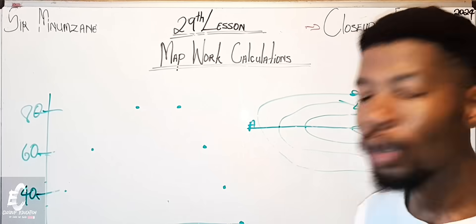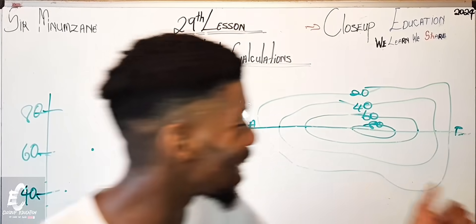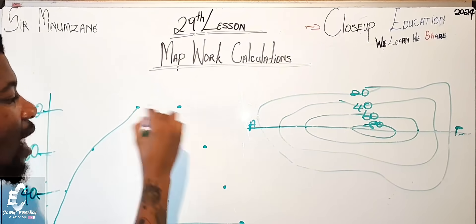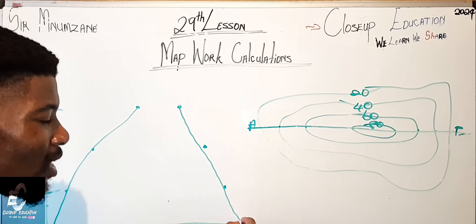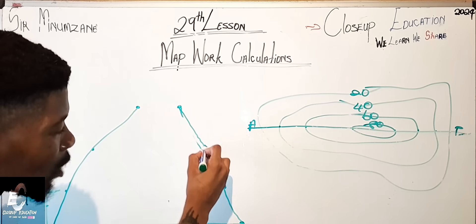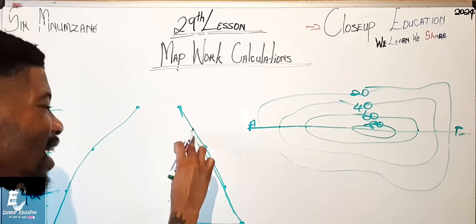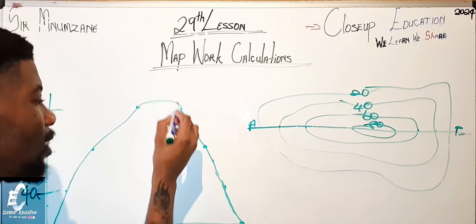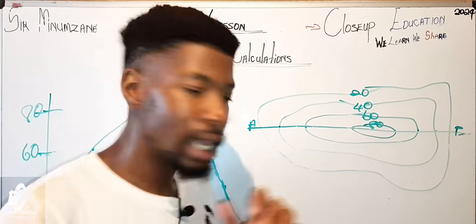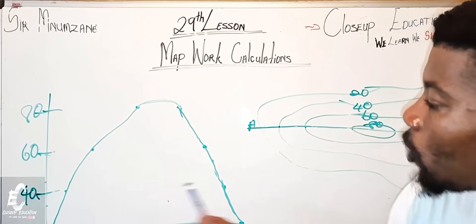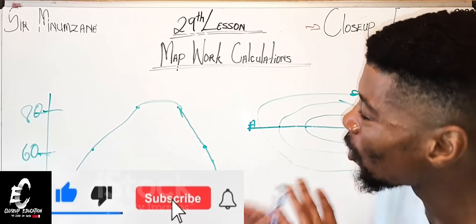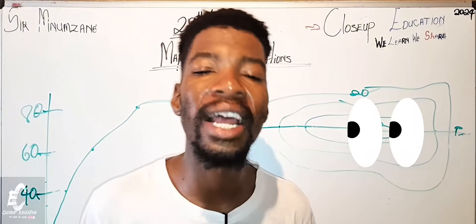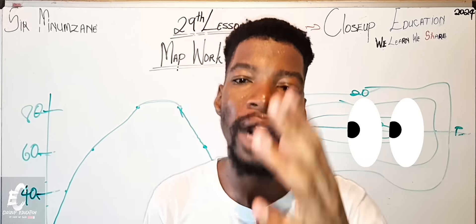Once you have all the dots plotted, you can already tell the gradient of the area. You just connect your dots thoroughly. Once connected, you can even add a hill or peak shape as needed. This is the cross-section showing the gradient of this particular area using the contour lines.